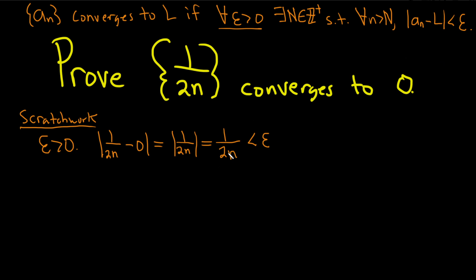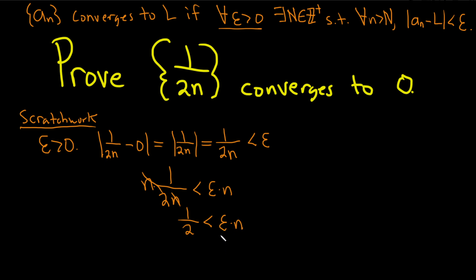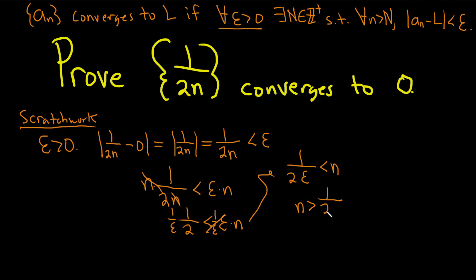We want 1 over 2n to be less than epsilon, so we can solve for n. Multiply both sides by n: the n's cancel, giving us one half less than epsilon times n. Then dividing by epsilon — and epsilon is positive so there are no sign issues — we get 1 over 2 epsilon is less than n.